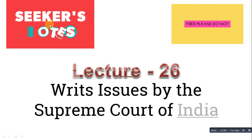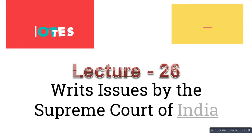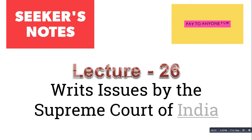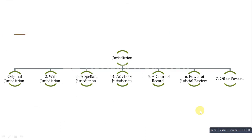Hi, you're watching Seekers Notes and this is lecture 26 in the series on Indian Constitution. From lecture 24 we have been talking about the Supreme Court — its nature, its importance in the Indian Constitution, and the impeachment of judges. Today we are going to talk about the rights and jurisdiction issued by the Indian Supreme Court. The court issues seven types of jurisdiction: original jurisdiction, writ jurisdiction, appellate jurisdiction, advisory jurisdiction, court of record, power of judicial review, and other powers.